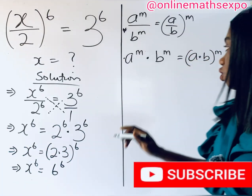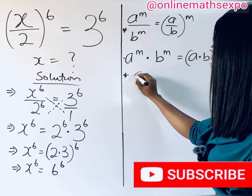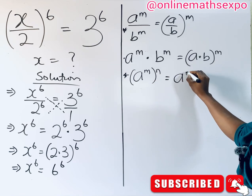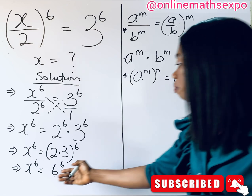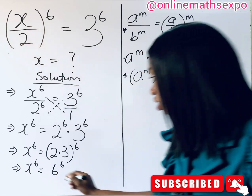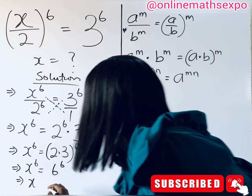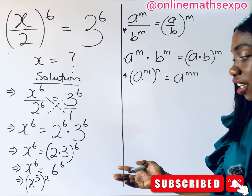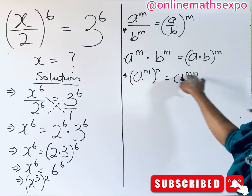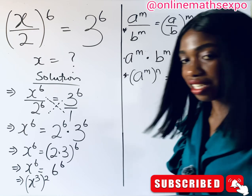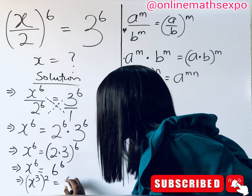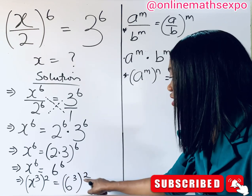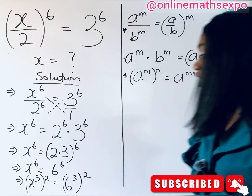Now remember this rule of exponents: a to the power of m, raised to the power of n, means a to the power of (m × n). Applying it here, we can rewrite x to the power of 6 as (x³)², and 6 to the power of 6 as (6³)². So we have (x³)² equals (6³)².